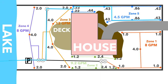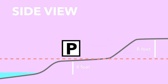If sprinklers are higher than the pump, the elevation change will reduce pressure. When calculating elevation, only the vertical distance is measured. The sprinklers in the front yard are 8 feet higher than the pump, which adds 8 feet of head to the total pressure lost.